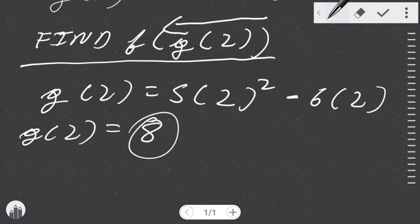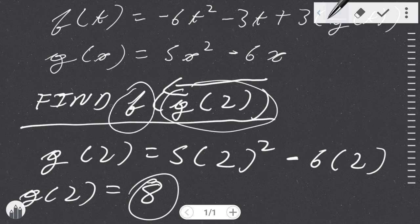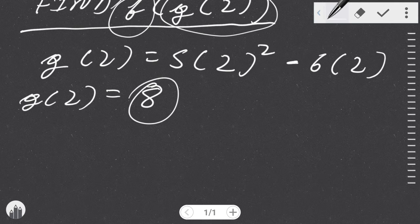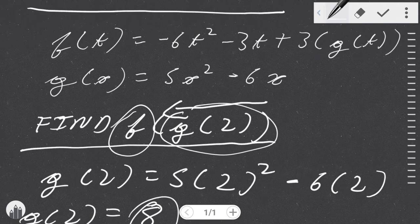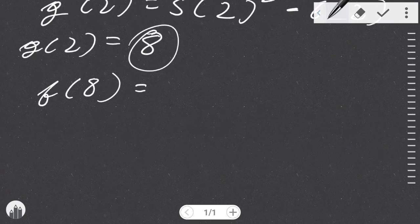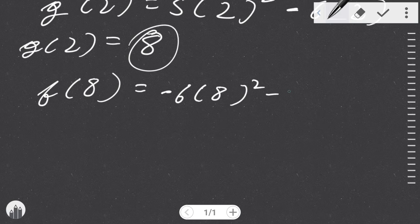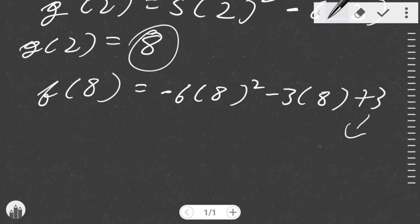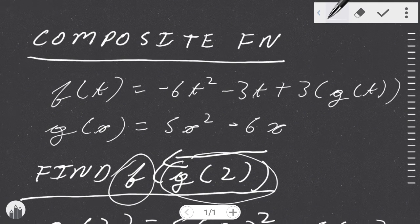Now you can feed this back to the f(t) equation. Now we have solved for this, now we are going for this one right here. So we do f(8) since we have the 8 answer here. What we're going to do is substitute 8 for everywhere we find t. So it's going to go like this: -6(8)² - 3(8) + 3, and here's the tricky bit—you're going to see that we have a g(t) function here.